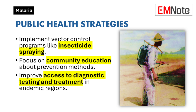Public Health Strategies: Efforts to control malaria include vector control programs such as insecticide spraying, community education on prevention methods, and improving access to diagnostic testing and treatment in endemic regions. These strategies are essential in reducing morbidity and mortality associated with malaria.